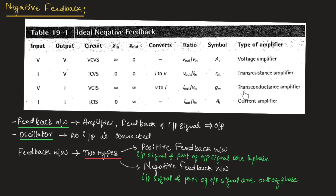These networks are known as trans-conductance amplifiers. If the input is current and the output is also current, such networks are known as current controlled current source (CCCS) networks. Here, input impedance is zero and output impedance is infinity. Practically, output impedance is very high. Since input and output are both current, there is no conversion. The gain is output current divided by input current, represented as AI, and these are known as current amplifiers.